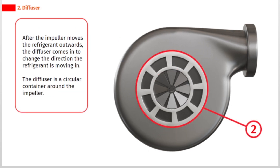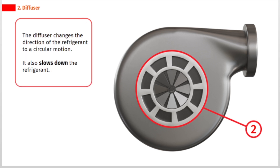After the impeller moves the refrigerant outwards, the diffuser comes in to change the direction the refrigerant is moving in. The diffuser is a circular container around the impeller. It changes the direction of the refrigerant to a circular motion and also slows down the refrigerant.